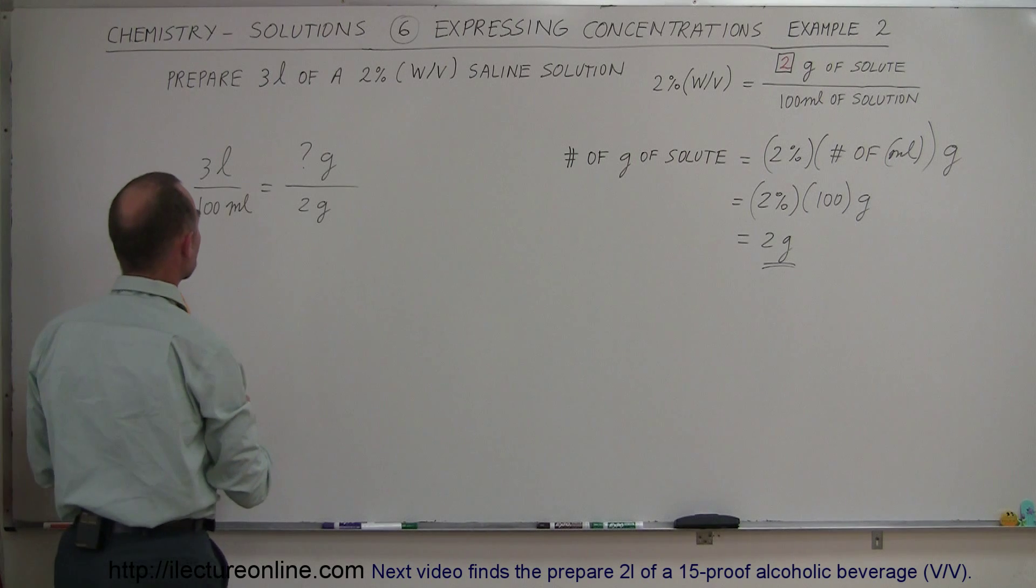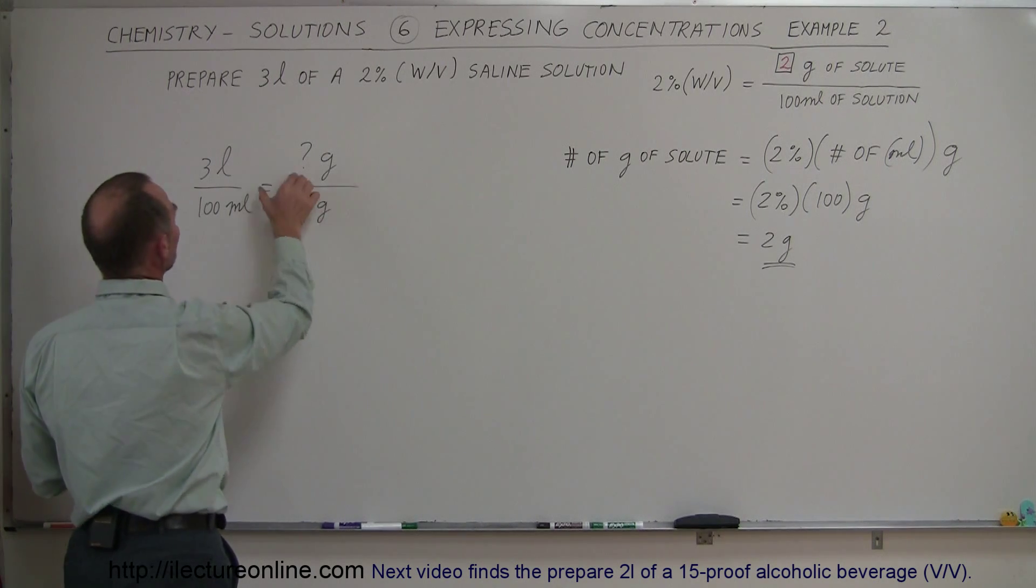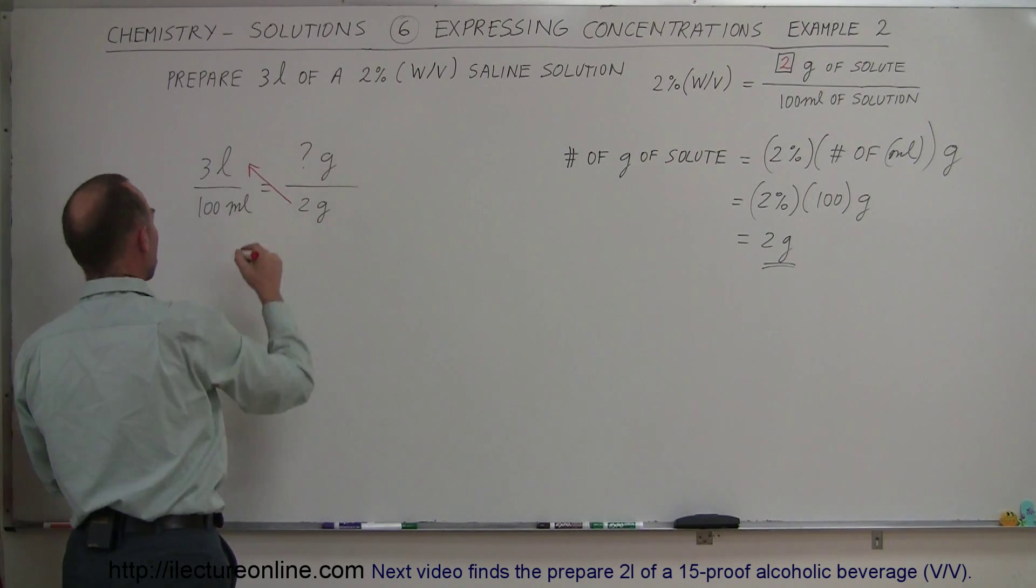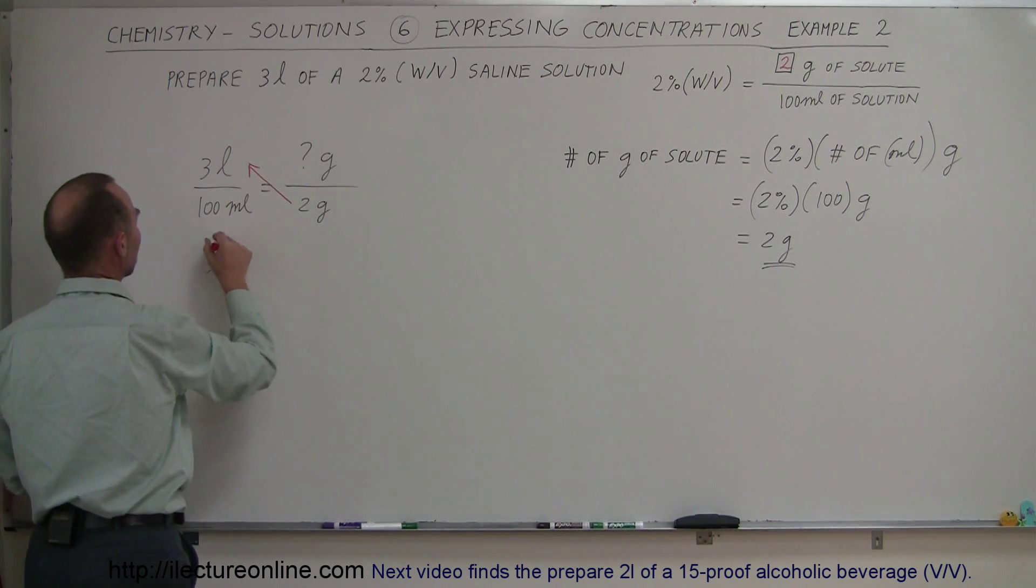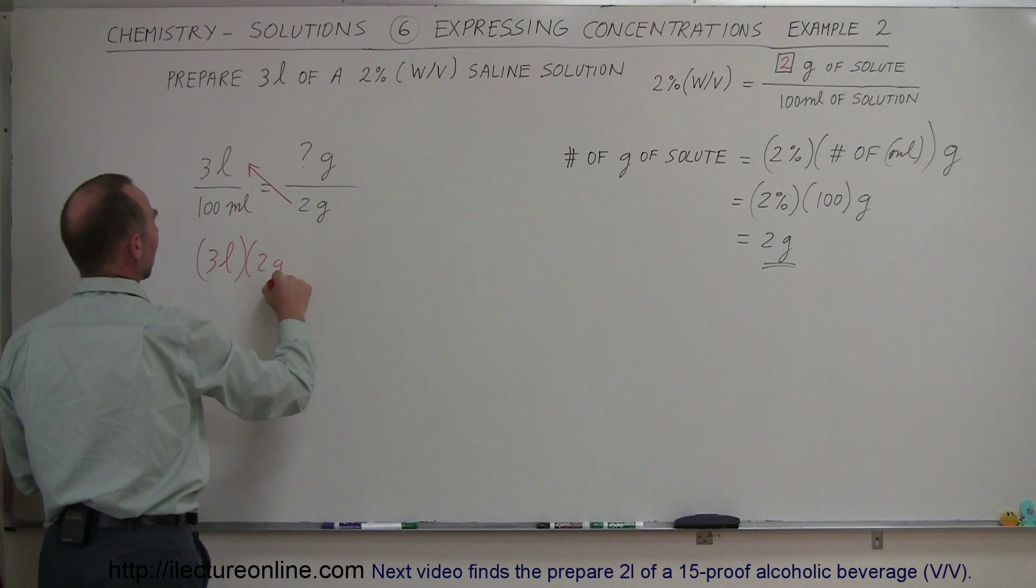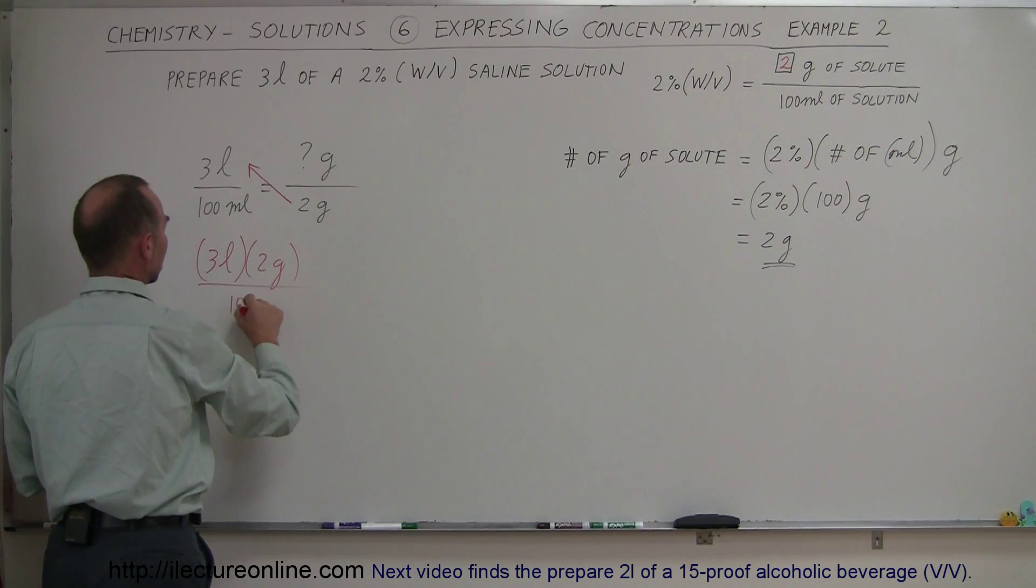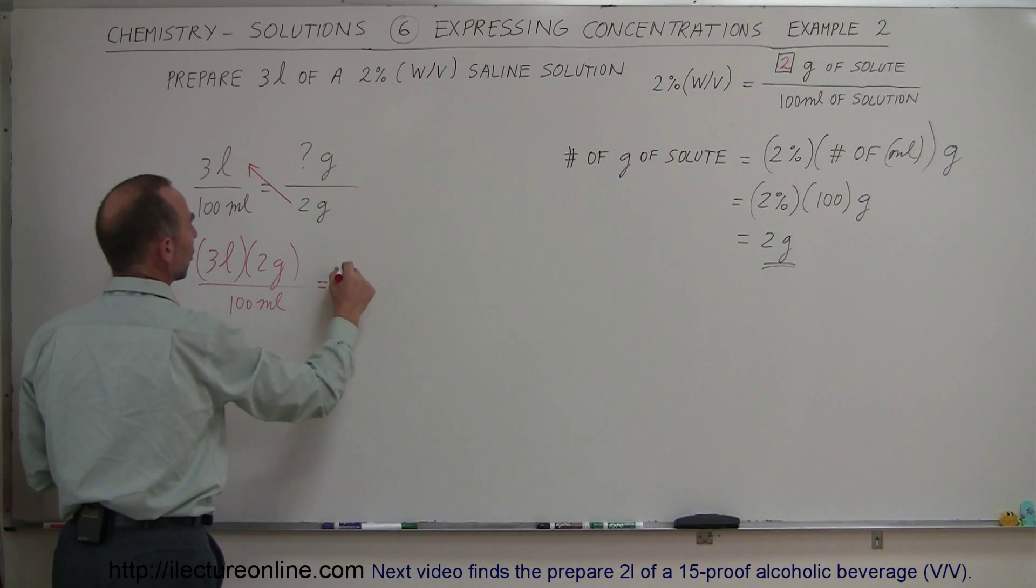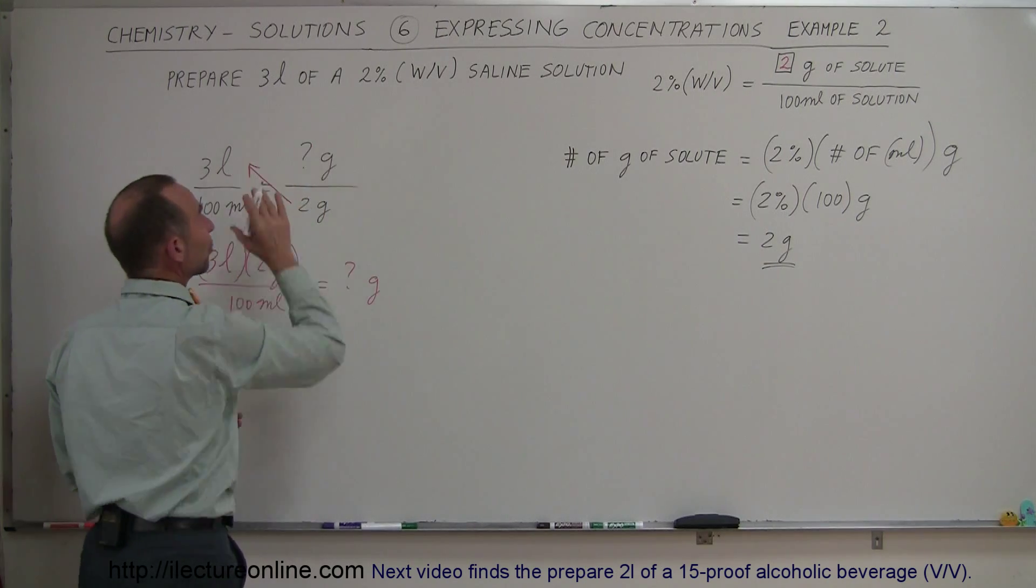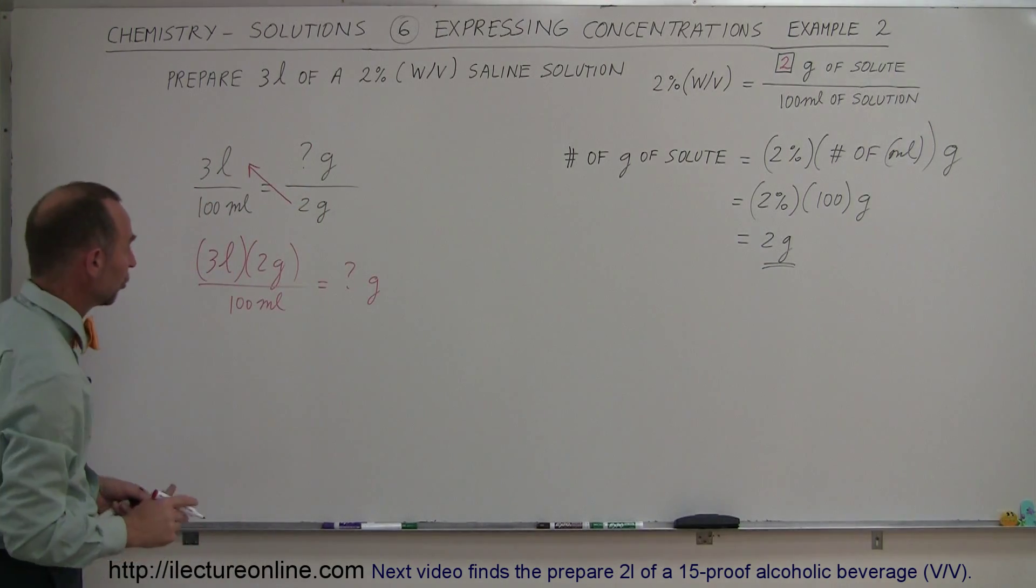And so what we can do here is simply multiply this over there. So we have a cross multiplication. We'll move the 2 grams up here. And so we end up with 3 liters times 2 grams divided by 100 milliliters. That is equal to the number of grams that we're looking for to make 3 liters of that solution, that 2% solution.